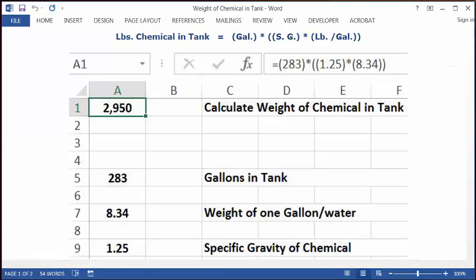Open up a blank spreadsheet. You can put your cursor in C1. You can type, calculate weight of chemical in tank. Put your cursor in A1. You can format it as whole numbers and set it as bold and centered. In the address bar, you can type in this equation.